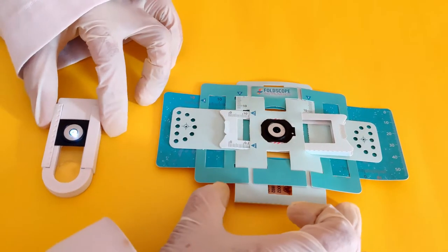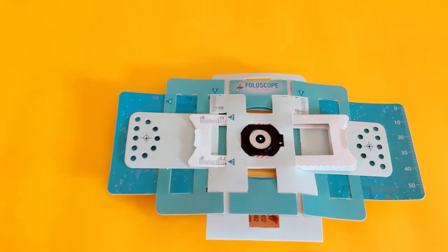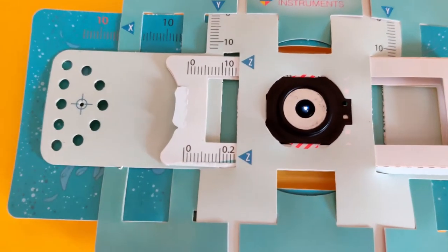View through the lens to observe the parts of the mosquito while holding the foldscope up to a bright light. For the purpose of this recording, we are using a light source attachment.